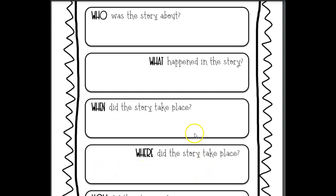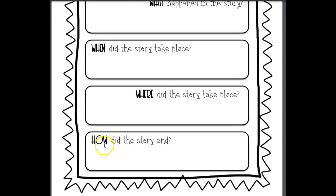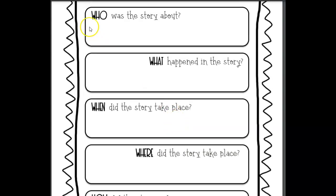Where did the story take place? What's the setting? Was it outside? Was it at school? Was it in Oklahoma? And then the last one is an H — 'how.' How did the story end? What was the solution? Sometimes you'll see this as a fifth W and it'll say 'why' — why was the problem solved — but they mean the same thing. So we're going to read The Frog Prince and learn how to retell or summarize using our four W's and an H.